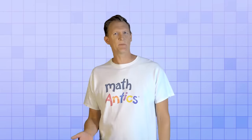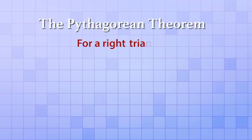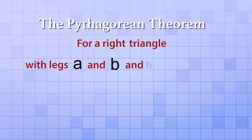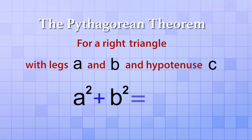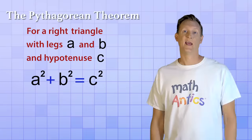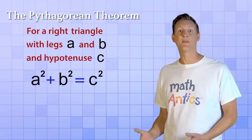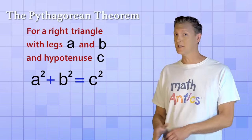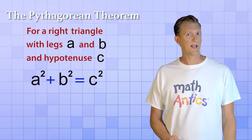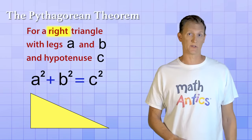Okay, now that you've got all that background info covered, let's see what the Pythagorean Theorem actually says. The theorem can be stated in several different ways, but the one we like best goes like this: for a right triangle with legs a and b and hypotenuse c, a squared plus b squared equals c squared. As you can see from this definition, the Pythagorean Theorem doesn't apply to all triangles — it only applies to right triangles.